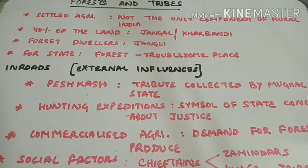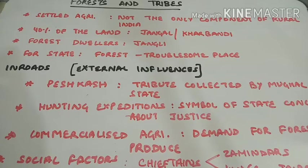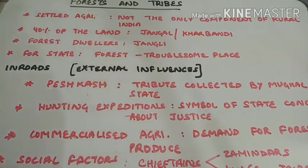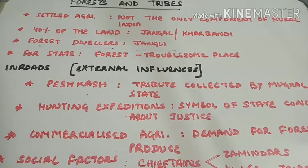Now coming on to the fourth topic: forests and tribes. When we discussed about peasants and agricultural production, we saw that because of varied topography, cultivators were not the only people in rural India — agriculture was not the only component. About 40% of the land was jungle or kharbandi. People lived in these forests and earned their livelihood from them. The forest dwellers were called the junglees — the term junglee does not mean uncivilized as it does today, but was used for people whose livelihood came from gathering forest produce, hunting, or shifting agriculture — someone who does not perform settled or sedentary agriculture.